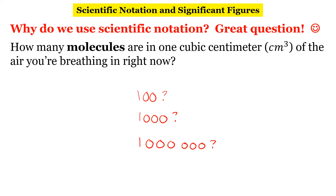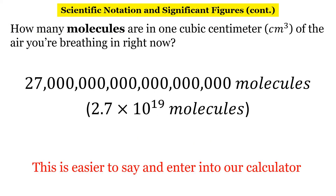The answer might actually surprise you. This gigantic number is actually how many molecules are in one cubic centimeter of the air you're breathing in right now. Let's try to figure out what this number is — we have hundreds, thousands, millions, billions, trillions, and we still have numbers left over. This is a really big number. So when we rewrite this in scientific notation, we write it as 2.7 times 10 to the 19.